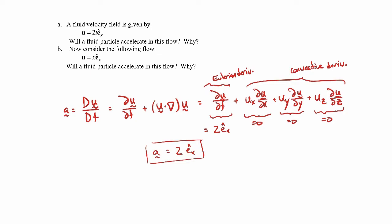This whole derivative here is known as the Lagrangian derivative. It goes by different names: Lagrangian derivative, material derivative are probably the two most common. So the Lagrangian derivative has two components to it: an Eulerian derivative, or local derivative, which just takes into account changes in time, and then the convective derivative, which takes into account changes in position. So this does have an acceleration because it's unsteady, and so the Eulerian derivative is not equal to zero.